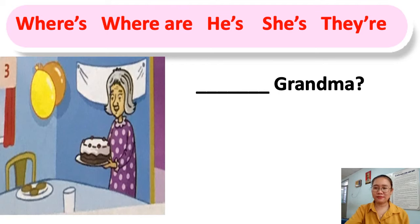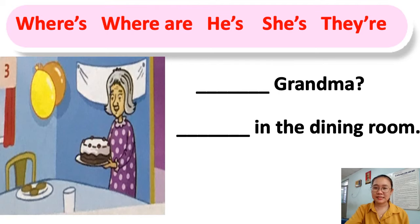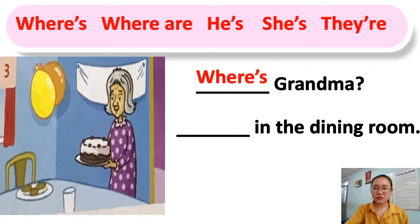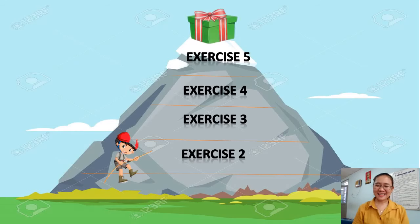Grandma is in the dining room. Remember, grandma is one person, so we use 'where is'. And the answer — because grandma is a woman, we must use 'she'. She is in the dining room. Yes, we finished Exercise 2!